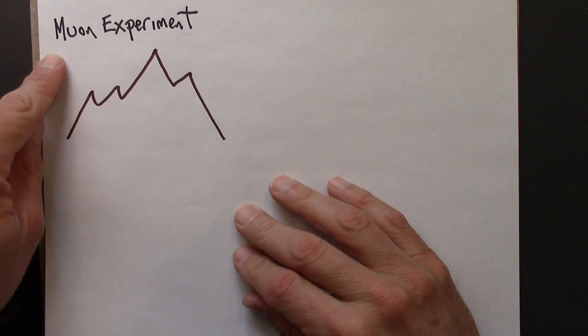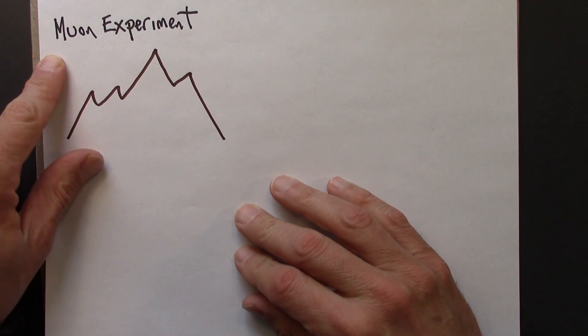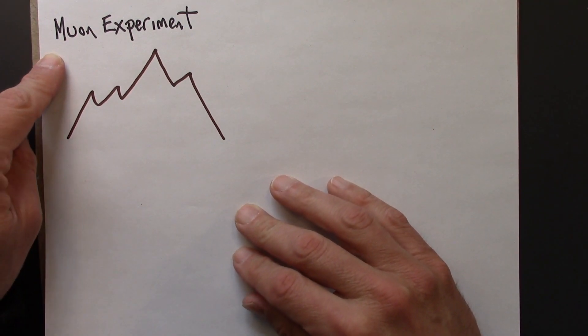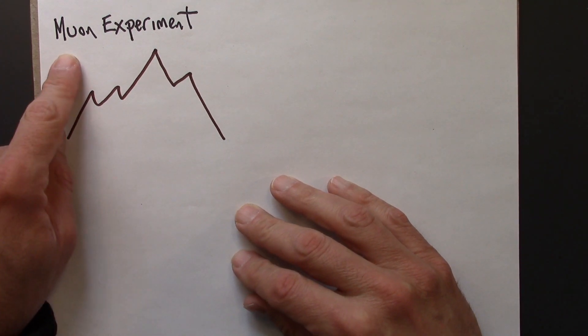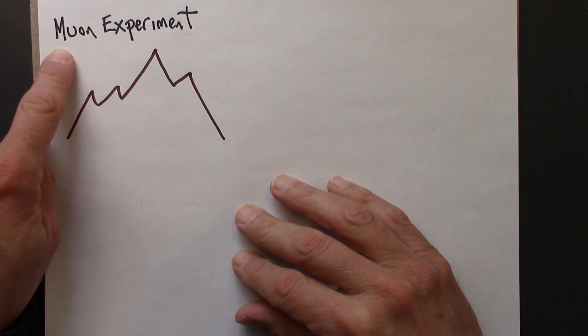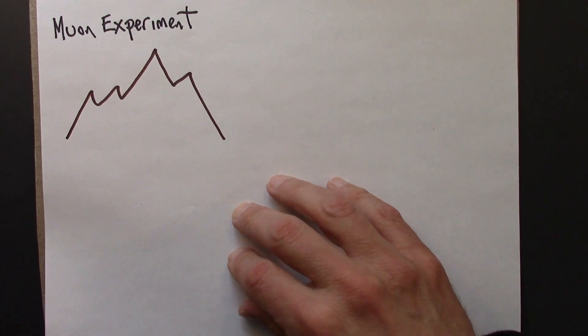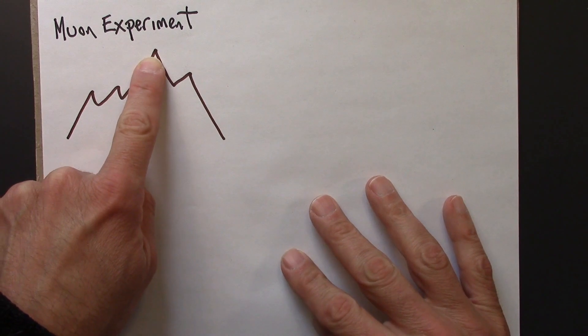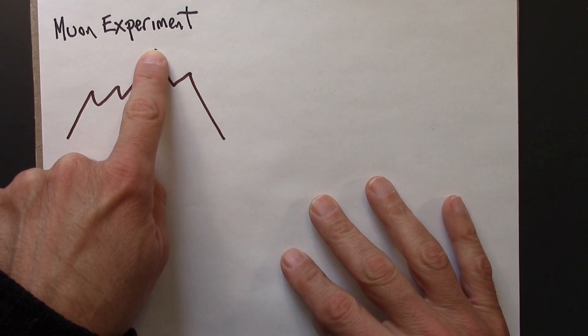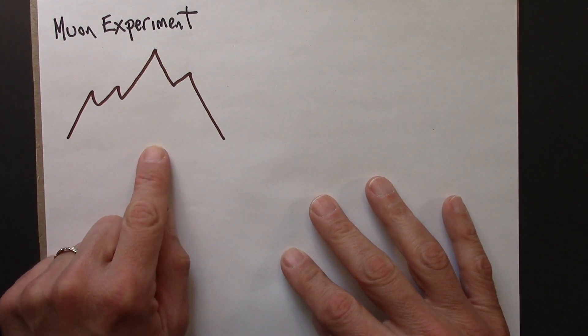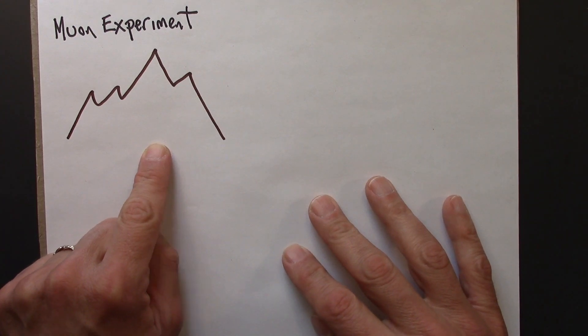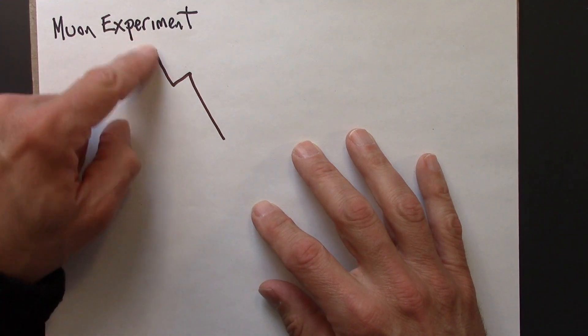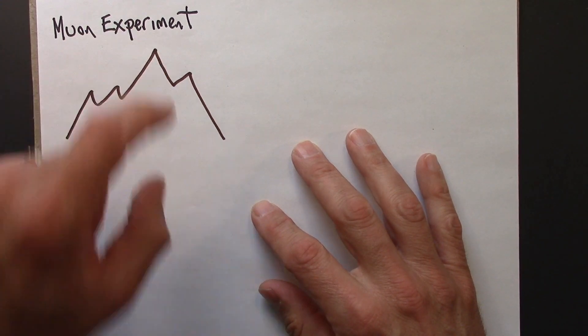So now let's talk about this muon experiment I alluded to earlier. This is an experiment that was carried out in 1963 by two Harvard physicists Frisch and Smith. They put a muon detector on the top of Mount Washington and counted the muons.